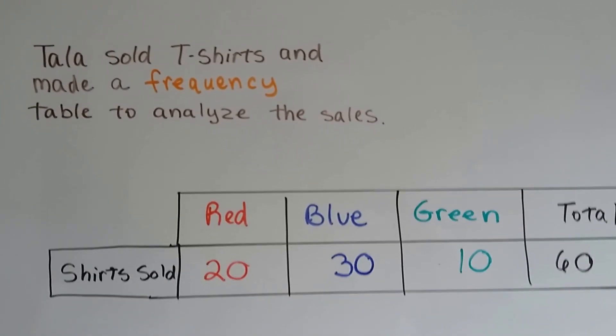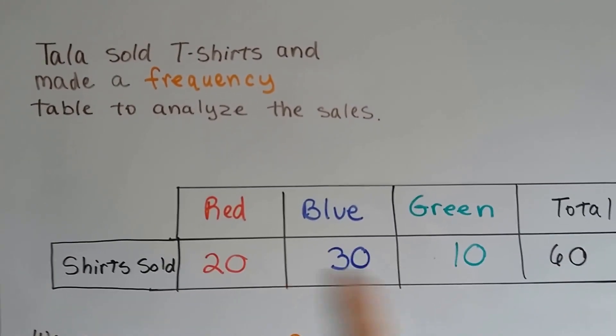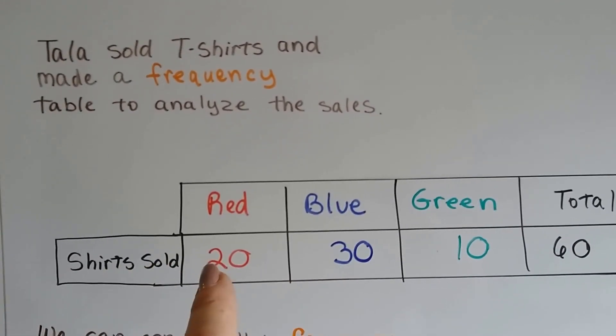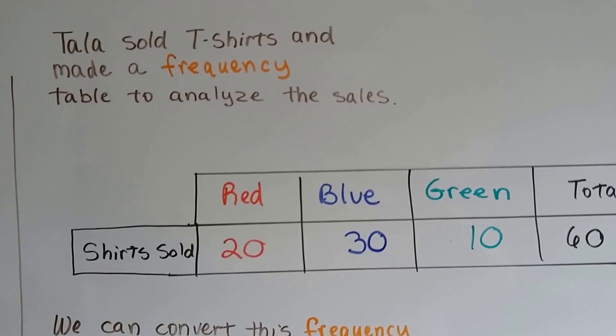I'm going to turn this into a relative frequency table. So we can see that it's just listing what occurred. That she sold 20 red shirts, 30 blue ones, 10 green ones, and that it totals 60 shirts.